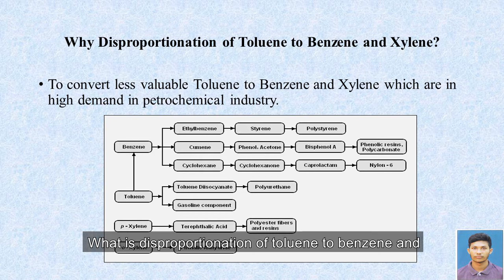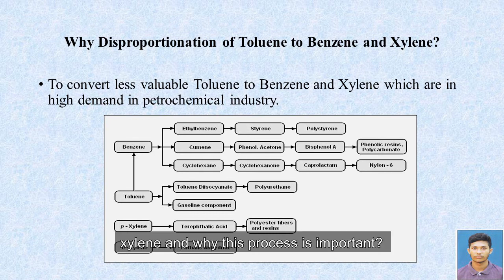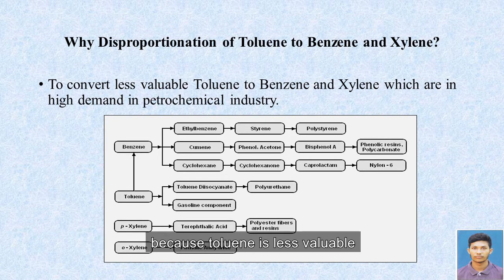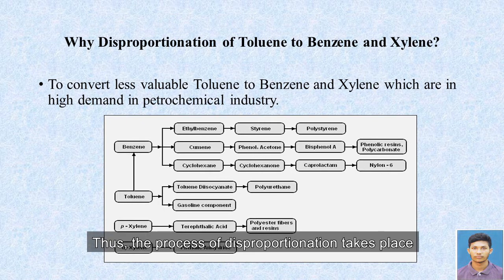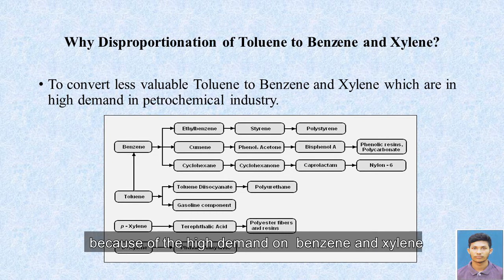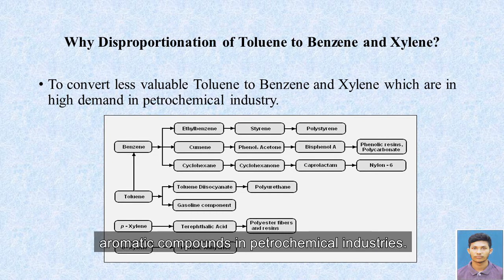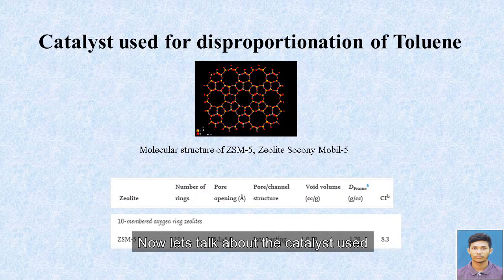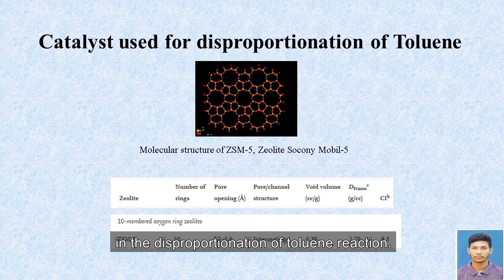What is disproportionation of toluene to benzene and xylene, and why is this process important? Toluene is disproportionated to benzene and xylene because toluene is less valuable compared to benzene and xylene. Thus, the process of disproportionation takes place because of the high demand for benzene and xylene aromatic compounds in petrochemical industries. The wide range of uses of benzene and toluene can be seen in the figure below.